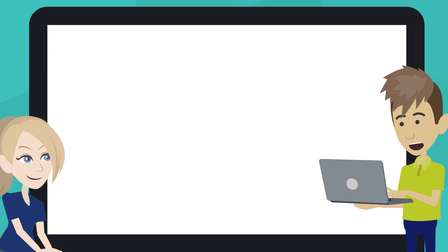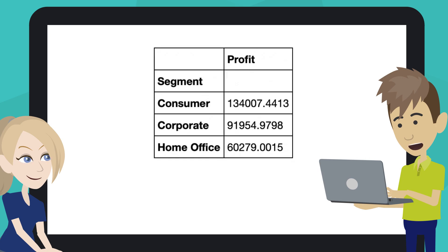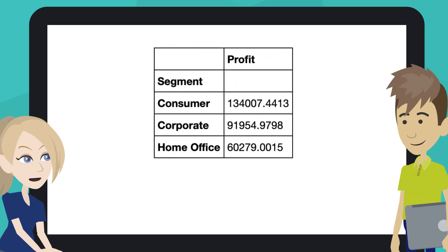Click on the Play button or hit Shift plus Enter. We can see the table for profits for each segment now.